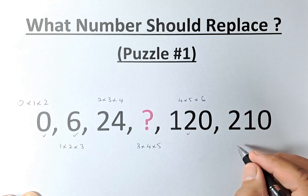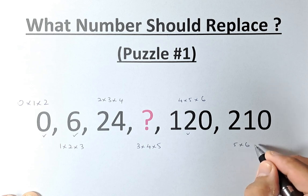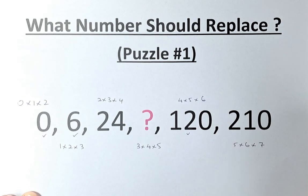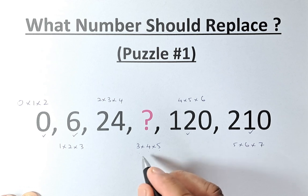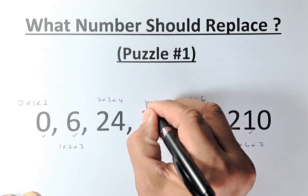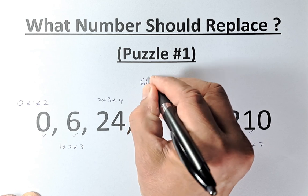And of course, 210 is going to be 5 times 6 times 7. 5 times 6 is 30. 30 times 7 is 210. And we are on the right track. So the question mark, as I said before, is going to be 3 times 4 times 5. 3 times 4 is 12. 12 times 5 is 60. So the answer for the question mark is 60.